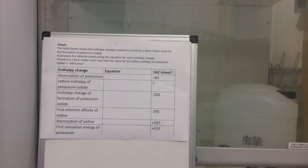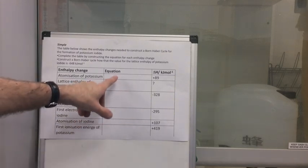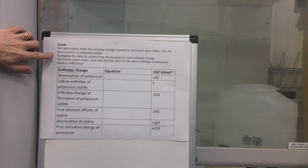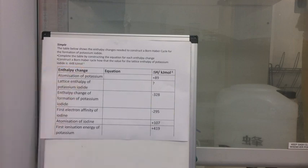So we've got this question and we've got to fill in the table here with some equations, and that's obviously going to test our knowledge of the various enthalpy changes that are involved in Born-Haber cycles. Then once we've completed the table, we've got to construct the Born-Haber cycle and show that's the answer for the lattice enthalpy for potassium iodide. So we'll start with the equations.